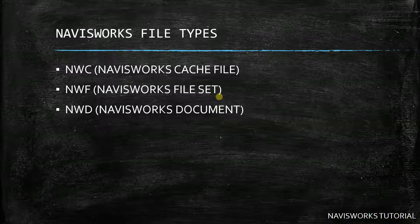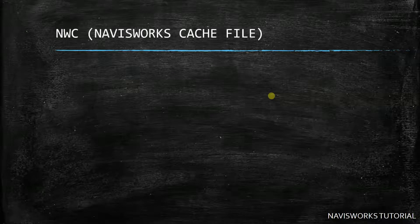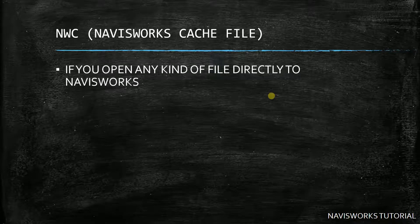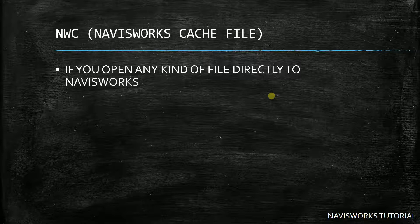Let's talk about the NWC first — the Navisworks cache file. NWC files are created when you open any kind of file directly in Navisworks. For example, if you open Navisworks and use the Open tool to open an AutoCAD file, that file gets converted to an NWC file.